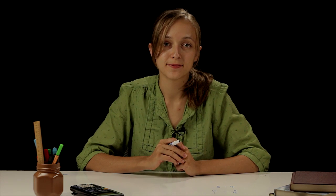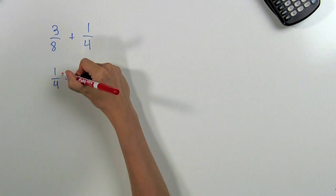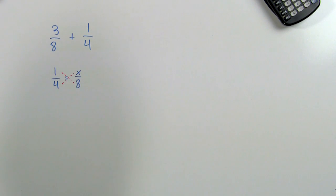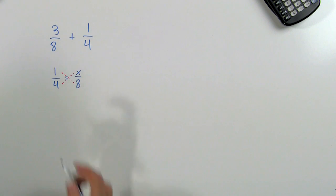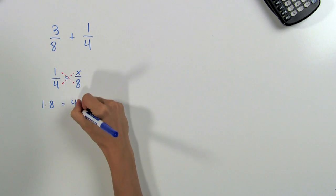To figure out what x is, we can use cross multiplication. You may recall that in cross multiplication, we multiply the opposite diagonal sides times each other and set that equal. So in this case, we will have 1 times 8 is equal to 4 times x.